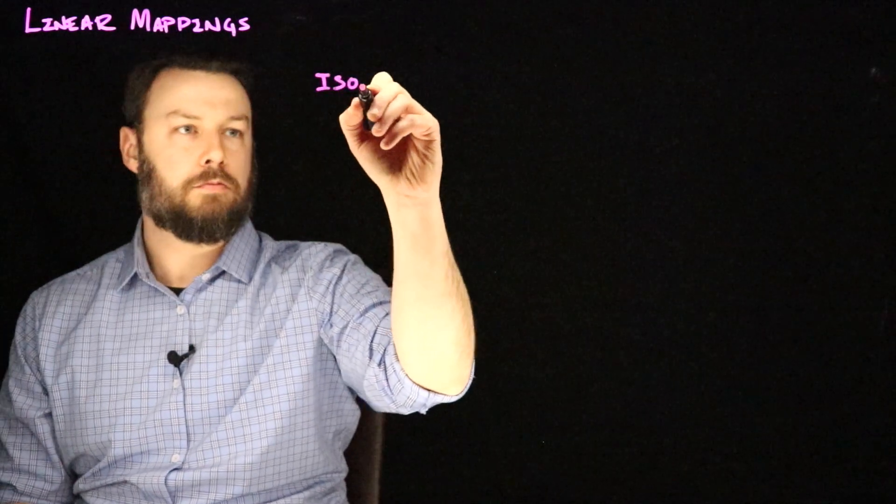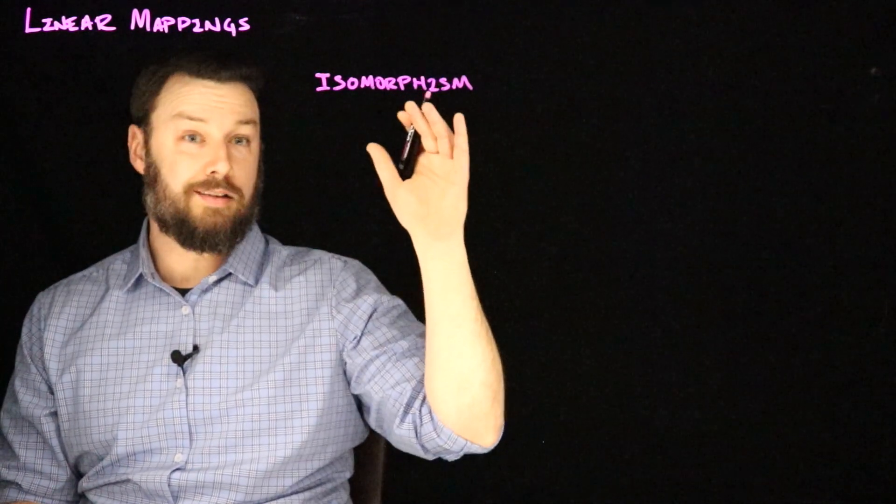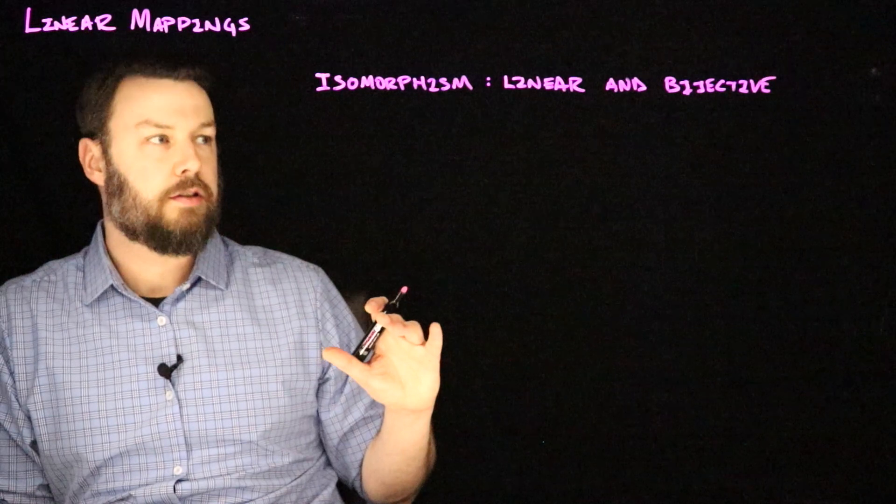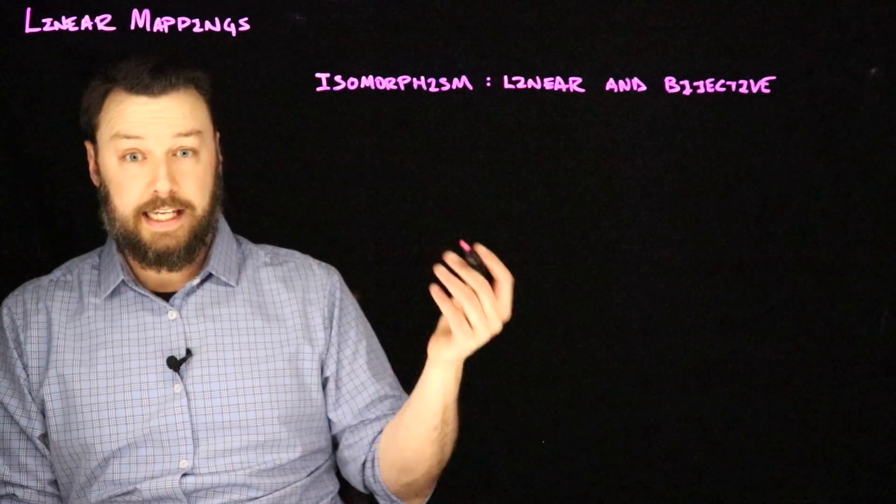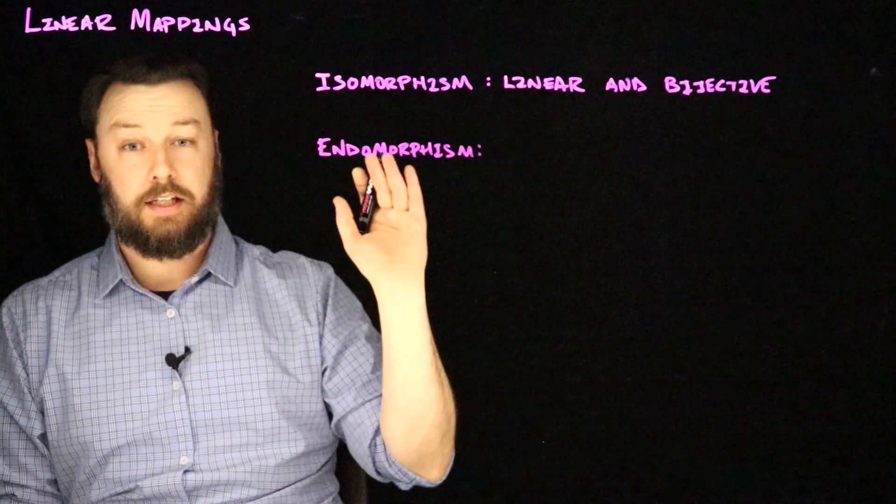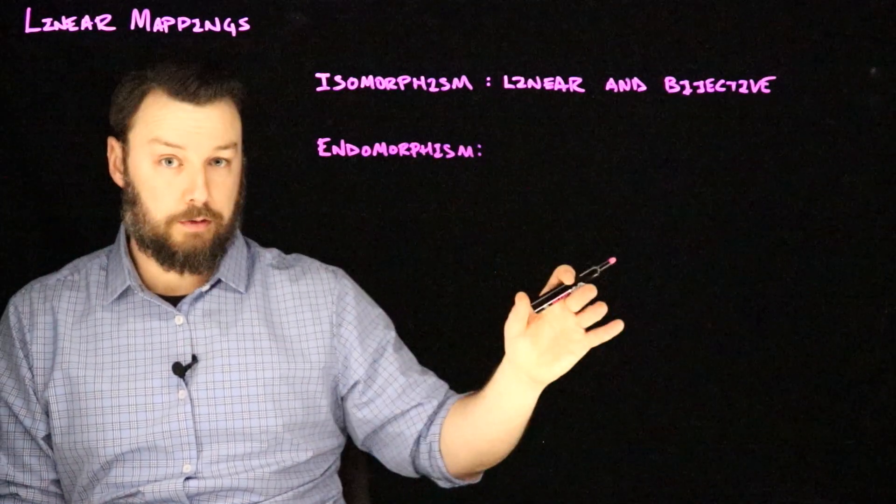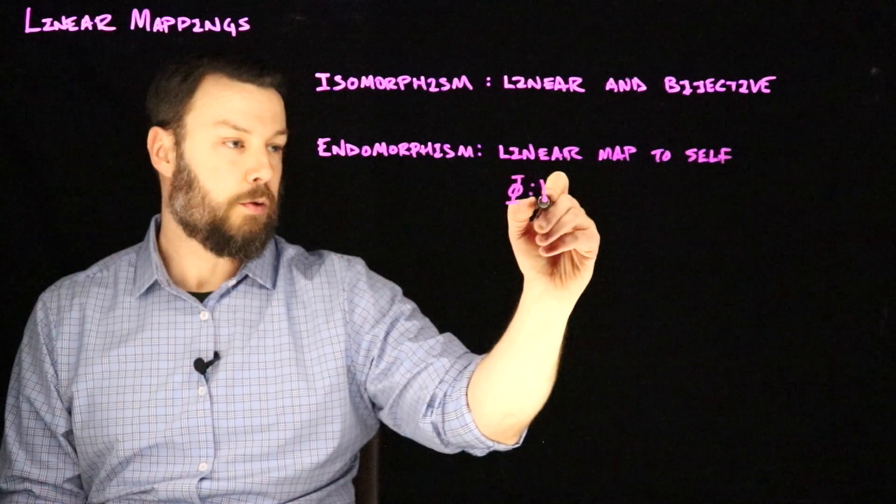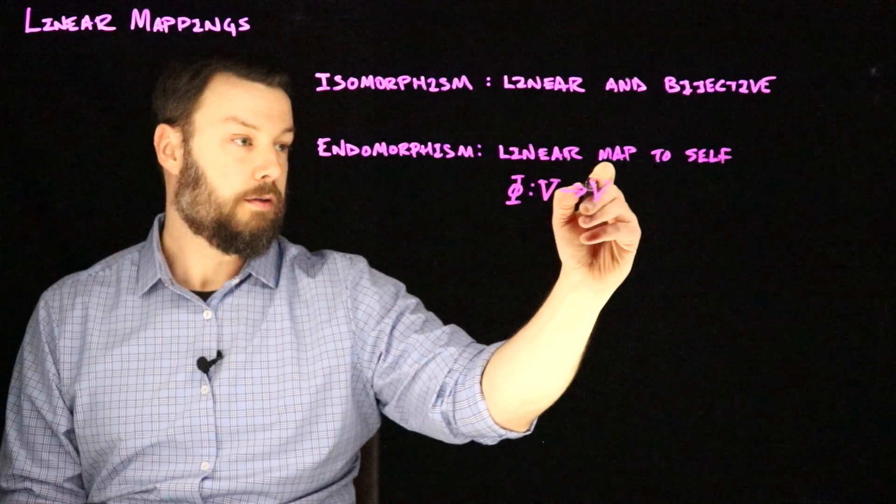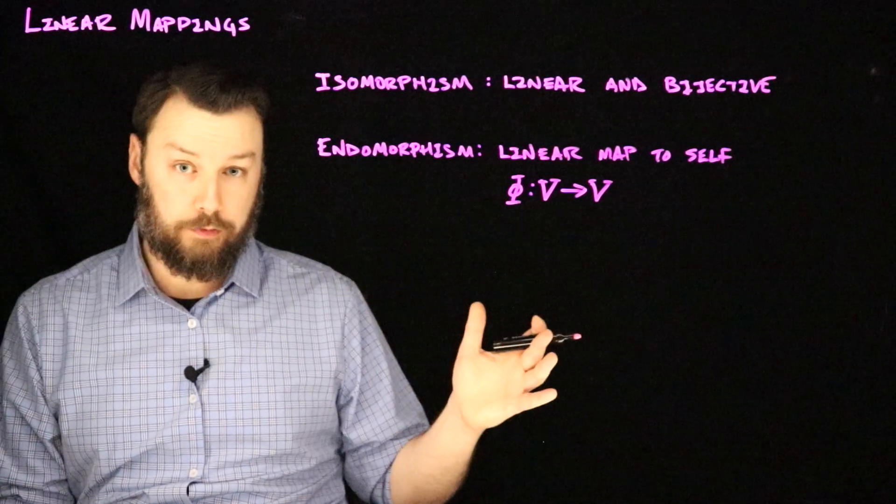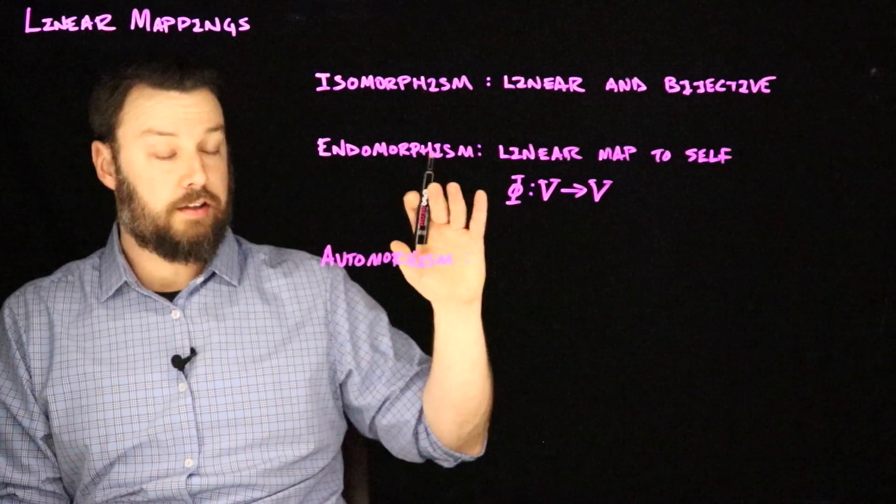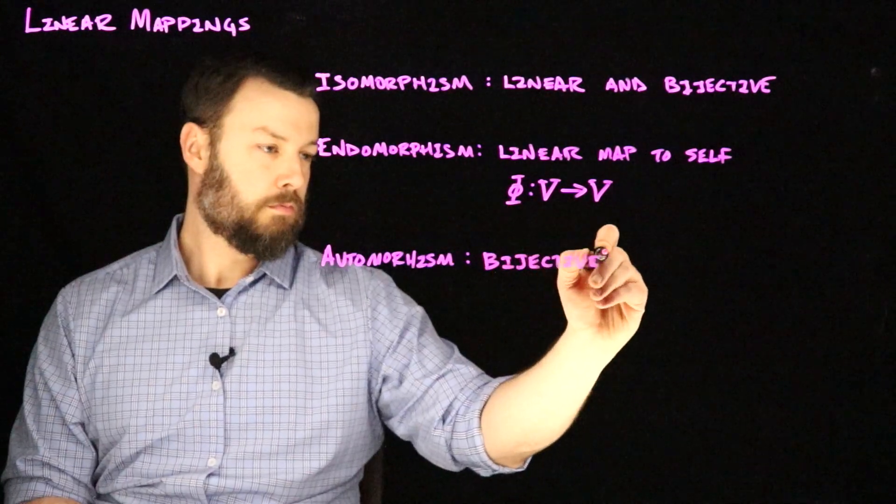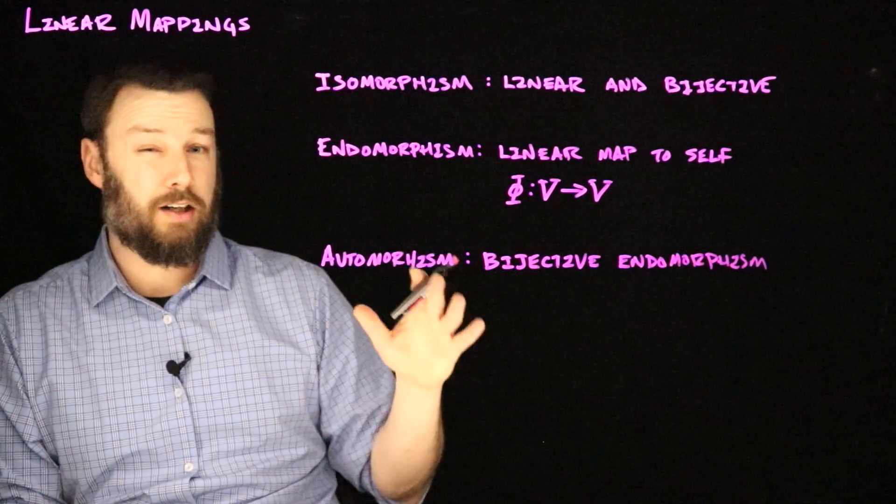An isomorphism is a linear bijective map. Now in mathematics, isomorphism describes a lot of different kinds of things, but here we're going to treat them as linear and bijective. An endomorphism is a linear map from one space back to itself. So this would be where if we had a Phi, rather than going from V to W, we would go V back to V again. So you can think of this as being like a square matrix. And then an automorphism is one that is linear and goes back to itself. So it's an endomorphism and it's also bijective, so it has an inverse. So you can think of this as being a square invertible matrix.